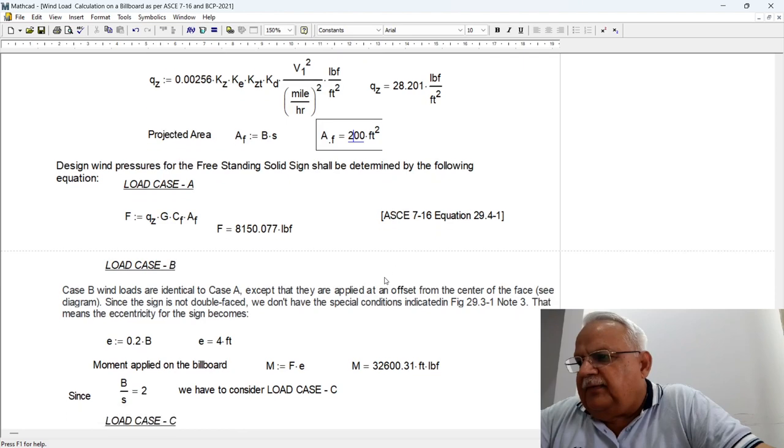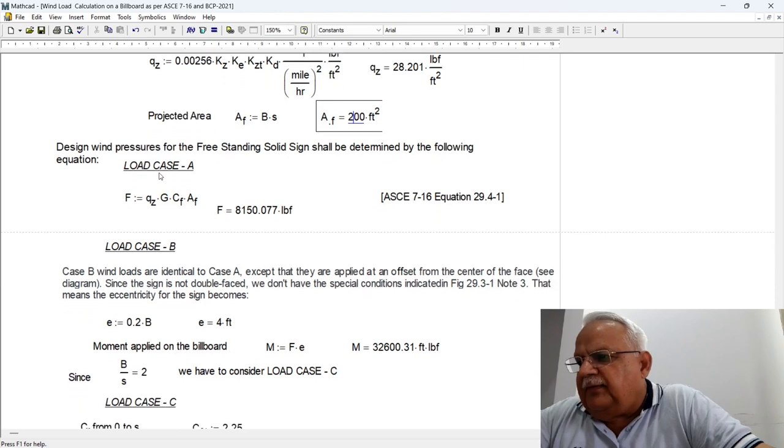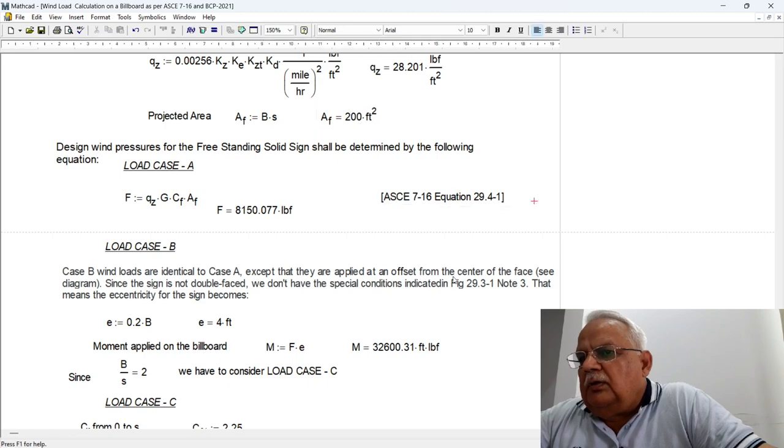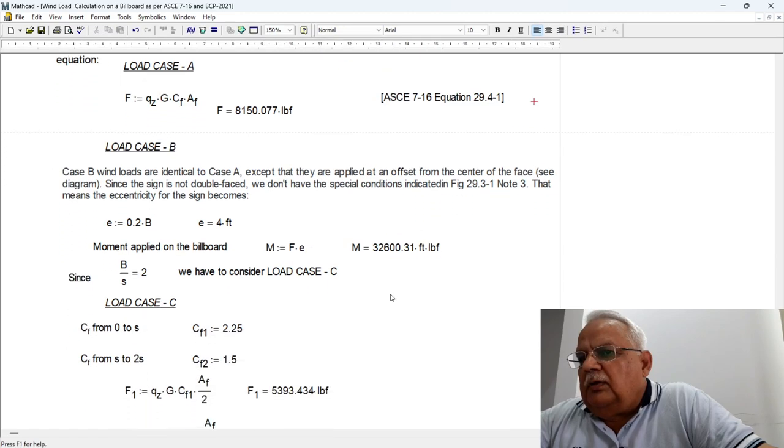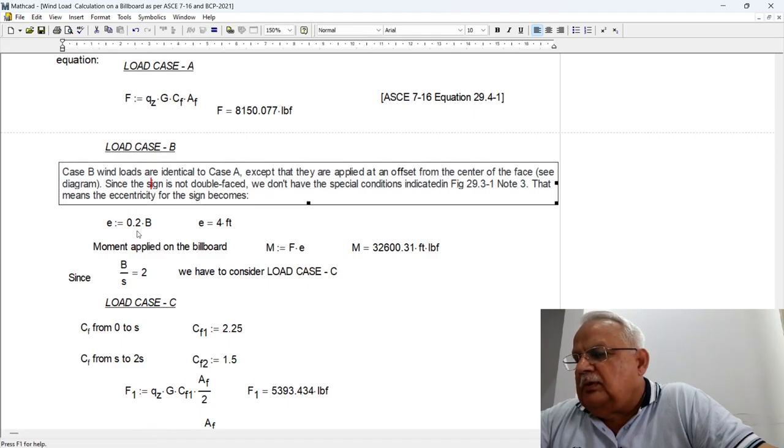Now the area of the billboard itself is equals to B into S, this comes out to be 200 square feet. Considering case A, case A is qz into G into Cf into A. By plugging in all these values, the force comes out to be 8150 pounds. This is equation 29.4-1.